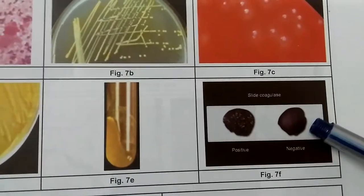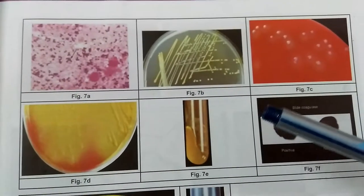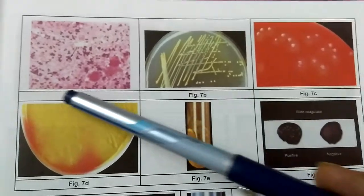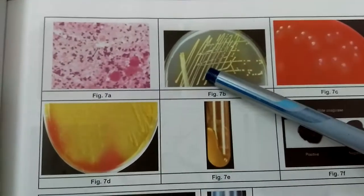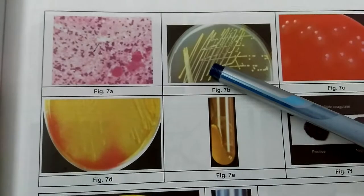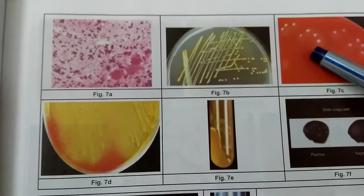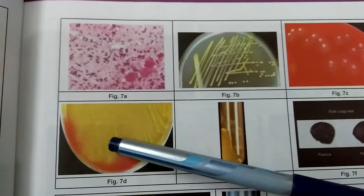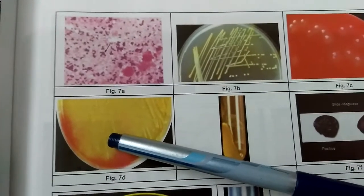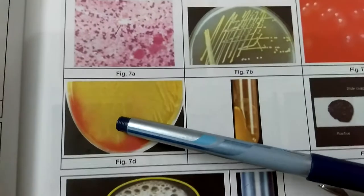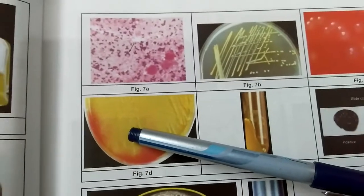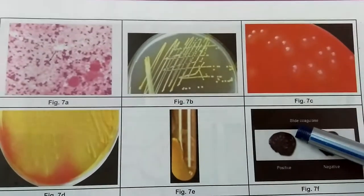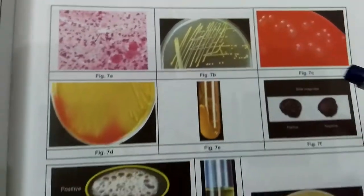To summarize the six images: 7a is Gram staining showing Gram-positive cocci in clusters; 7b is nutrient agar with golden yellow pigmentation; 7c is blood agar with pinhead colonies and narrow zone of beta-hemolysis; 7d is mannitol salt agar, which is used selectively for Staphylococcus aureus; 7e is the tube coagulase test; and 7f is the slide coagulase test.